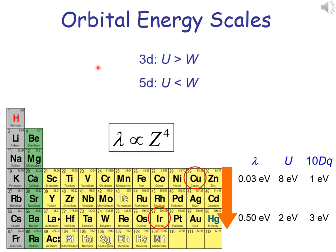Put simply, Mott insulators form when the local Coulomb interaction is larger than the relevant electron bandwidth. In general, this does not hold in 5D materials because of their more extended orbitals. However, since the spin-orbit coupling strength is proportional to the fourth power of the atomic number, it is rather strong in 5D atoms compared with other leading energy scales such as local Coulomb interaction and crystal field splitting.